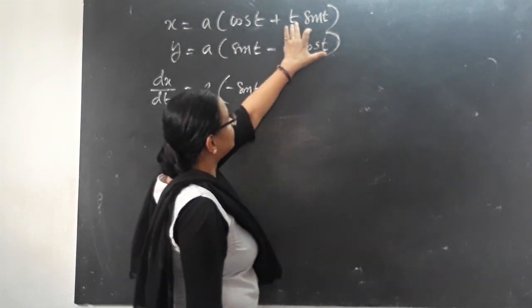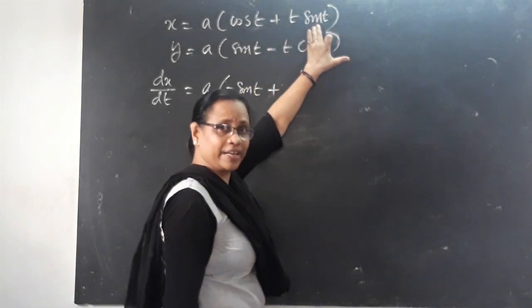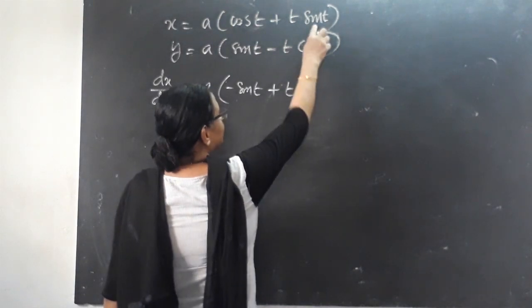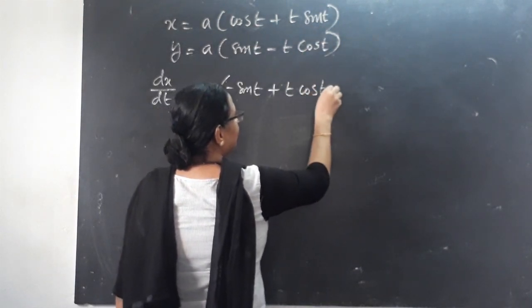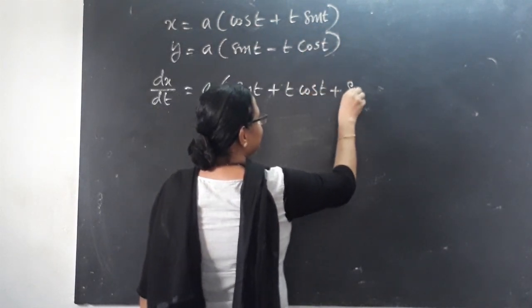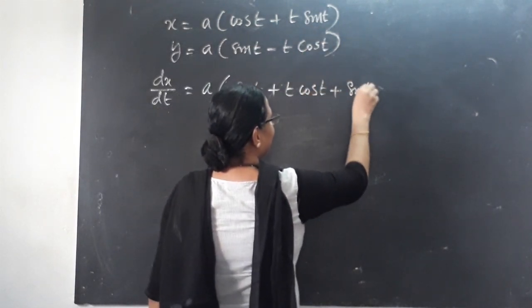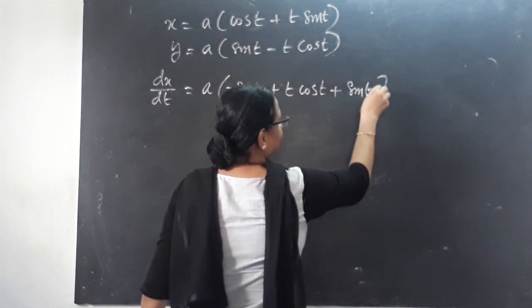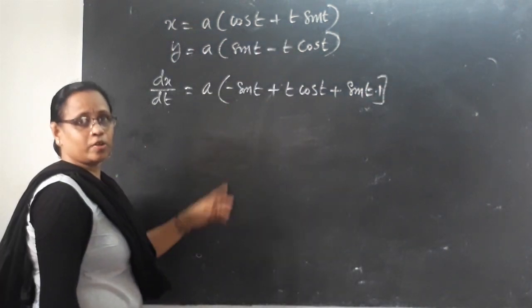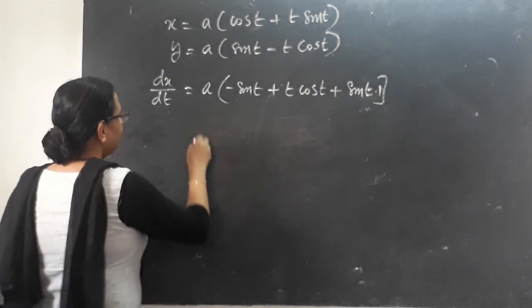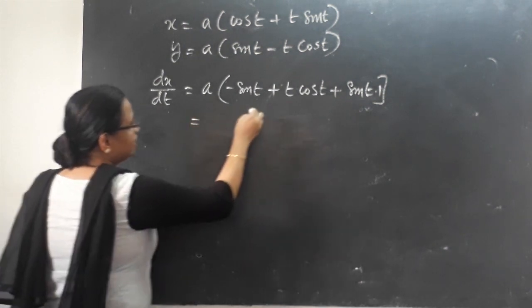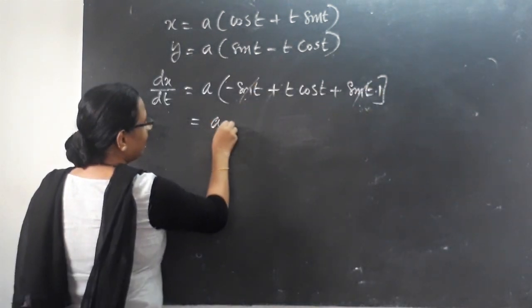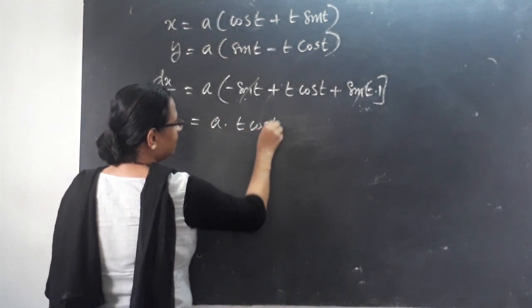First function into derivative of second function: t into sin t, plus sin t plus 1. Now, sin t is cut. The result is a into t cos t.